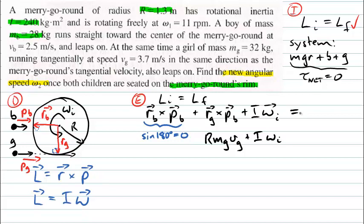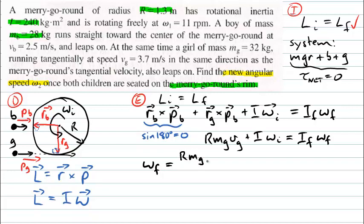The final angular momentum is one object moving around with one angular velocity, as the question tells us. So we need the final rotational inertia multiplied by the final angular velocity, and that final angular velocity is what we're trying to calculate. Rearranging the equation, the final angular speed equals: (r × m_g × v_g + I × ω_i) divided by the final rotational inertia once both the boy and the girl have landed on the rim.